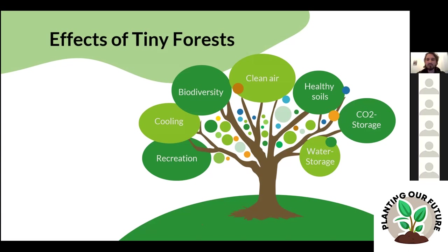Water storage and infiltration are also key benefits. Due to climate change, summers are getting drier and hotter, but we are also facing extreme weather events with very heavy rains. Cities are often not prepared for this and get flooded. Creating areas that can infiltrate water into the soil really helps cities prepare for extreme weather events. Trees also pump up water through their roots and transpire it, cooling their surroundings in the process.